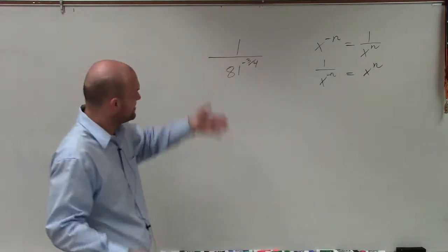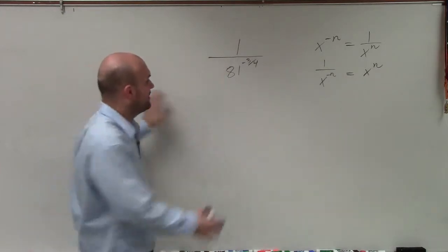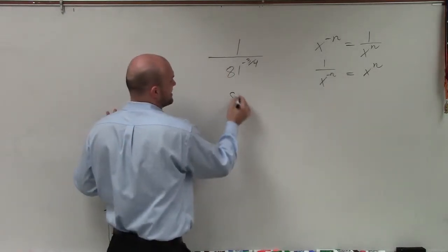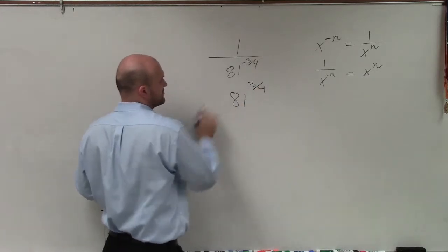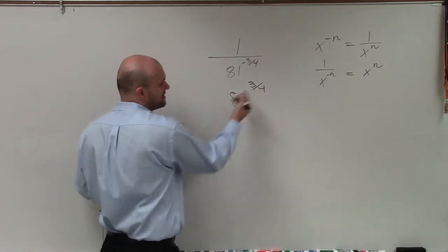Of course, those are using variables. Now we've got some real numbers. All we're going to do is say this is now 81 to the positive 3 fourths, as I rewrite that in the numerator and not under 1.